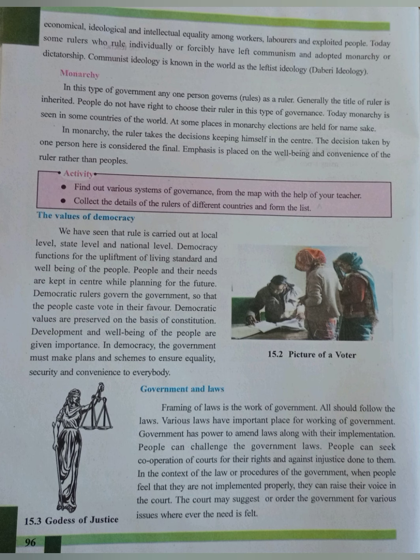In democracy, people elect their representatives through voting, and the government formed from those representatives administers the country according to public opinion. If the government does not administer according to public opinion, the people will not delegate administration to it in the next election. Since people have sovereignty in the formation of government in a democracy, people are considered as the center in democracy.